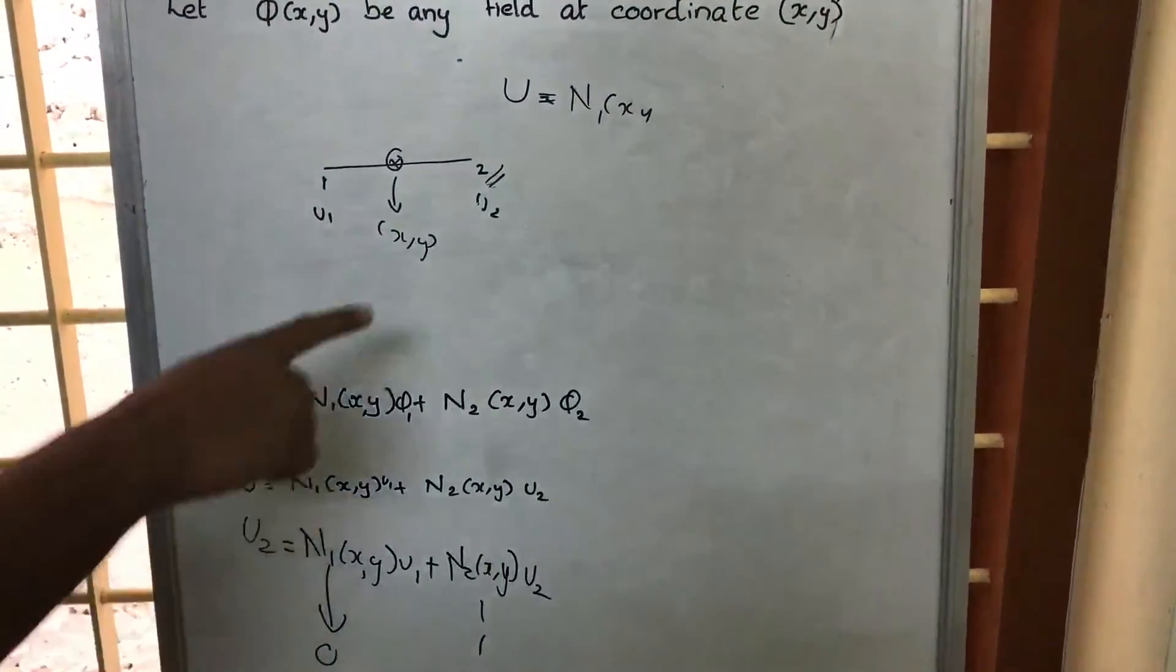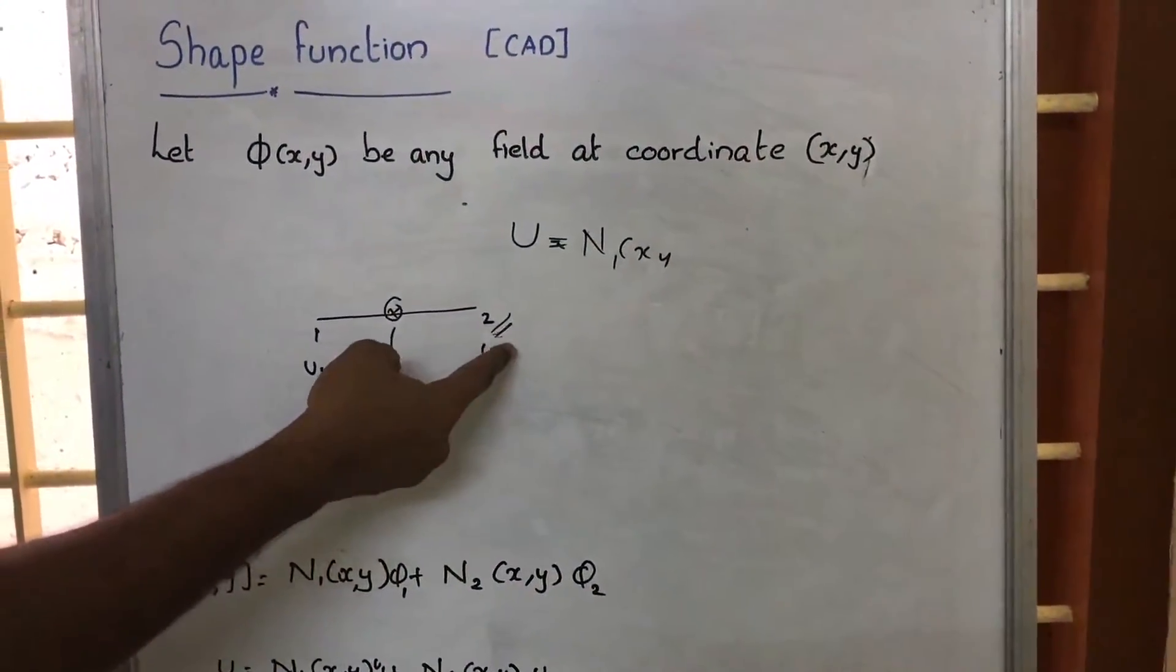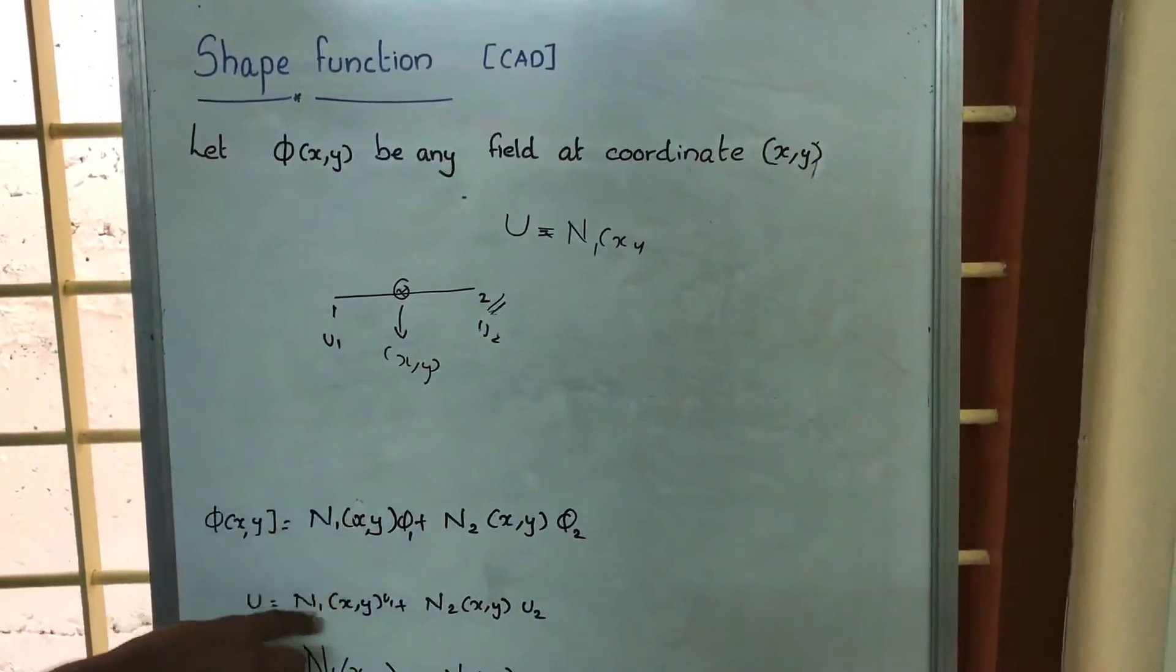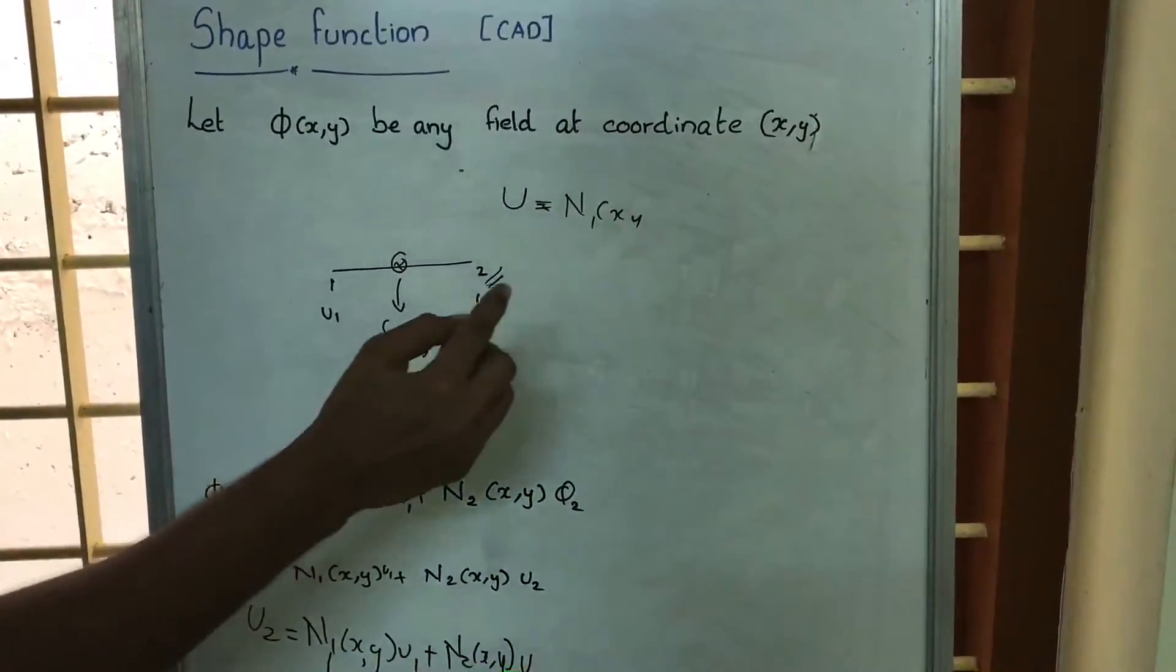That is, if you are considering node 2, at the node 2, the shape function at 1, N1(x,y) will be 0, and the shape function at this 2 will be unity.